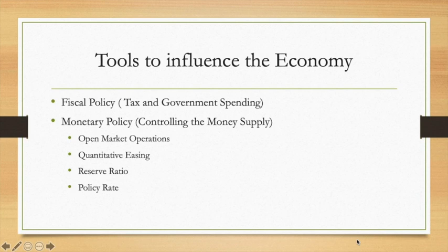The fiscal policy has to go through a parliamentary process and get approvals through parliament. The monetary policy is the domain of the central bank, which is an autonomous body separate from the government. They stabilize the economy by controlling the money supply. Tools of monetary policy include open market operations — buying and selling of bonds — quantitative easing, the reserve ratio, and the policy rate, which in our case is the interbank lending rate.